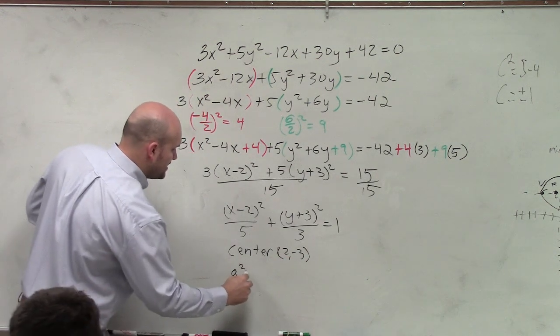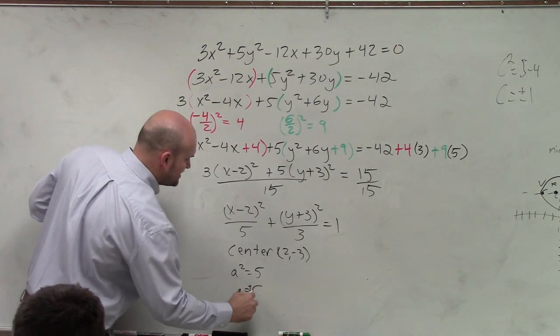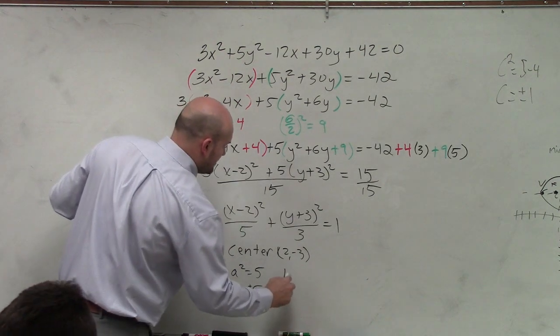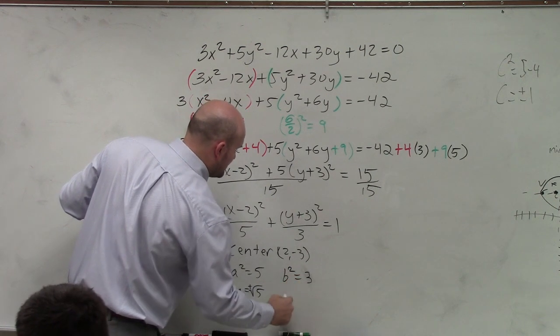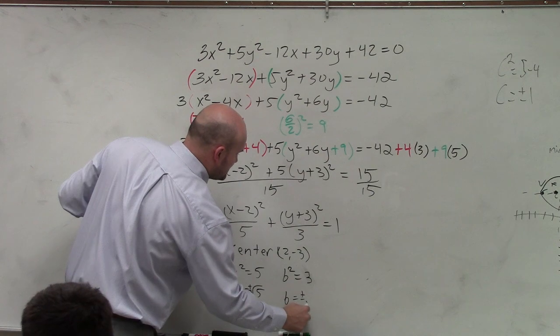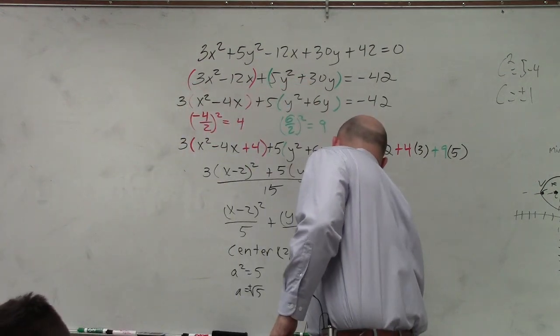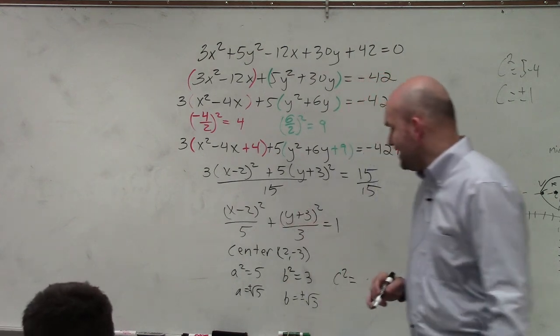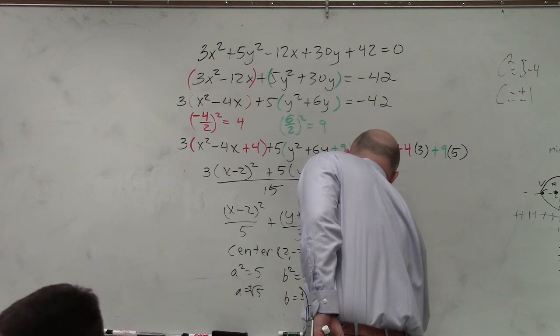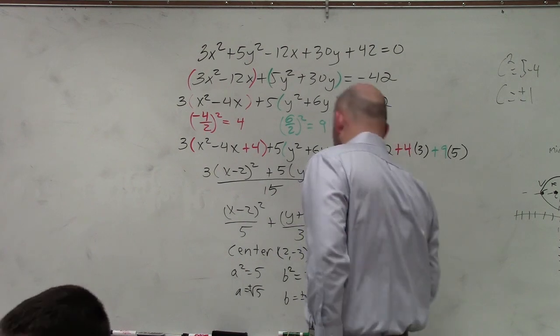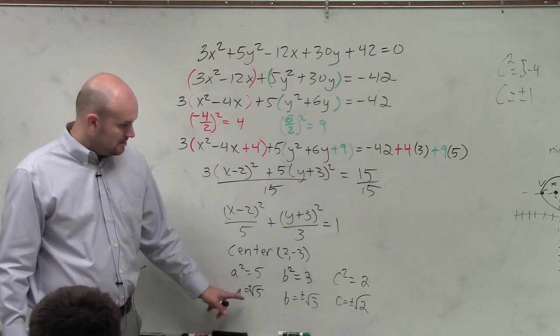I'm going to say a² is equal to 5. Therefore, a is equal to plus or minus the square root of 5. b² is 3. So therefore, b equals plus or minus the square root of 3.